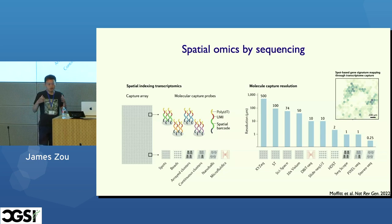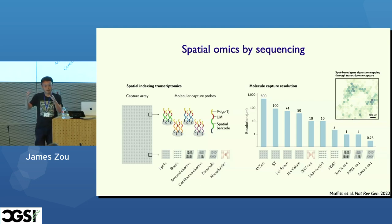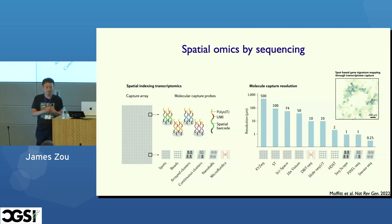With a spatial-by-sequencing approach, you start with arrays or chips where each dot corresponds to a set of probes. Those probes have spatial barcodes that encode x, y location information. When you take a biopsy tissue and overlay it on top of the chip, the probes interact with the cells — when they interact with transcripts, they attach barcodes to those transcripts. Afterward, you sequence the RNA using standard sequencing technologies, but now you also have the x, y location from the spatial barcode.